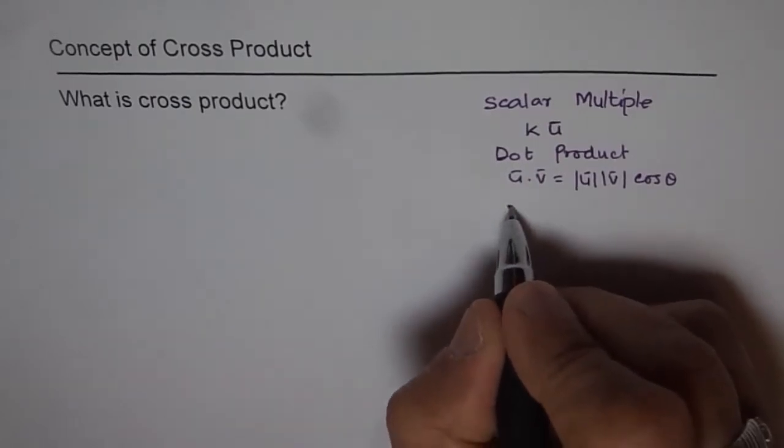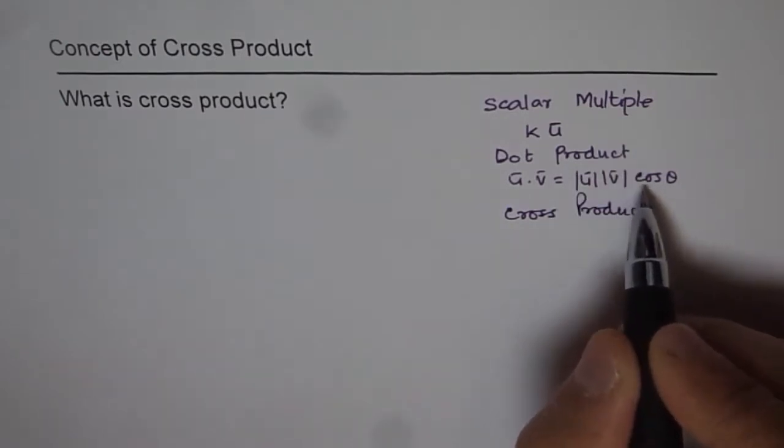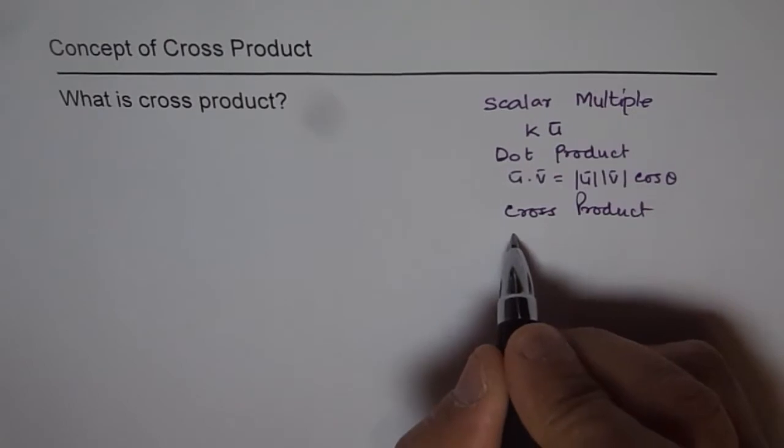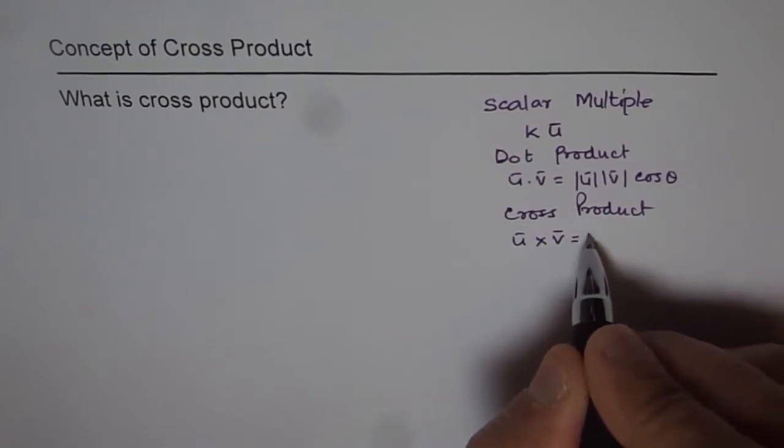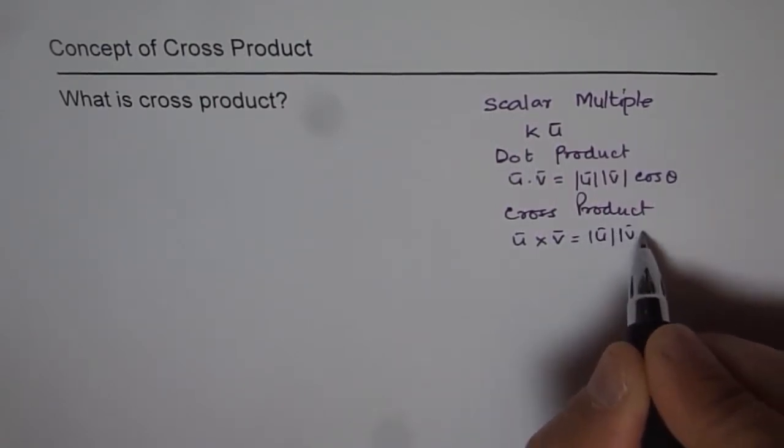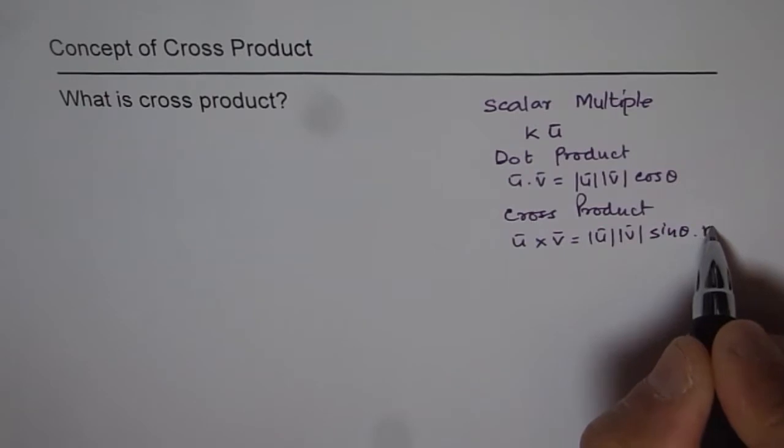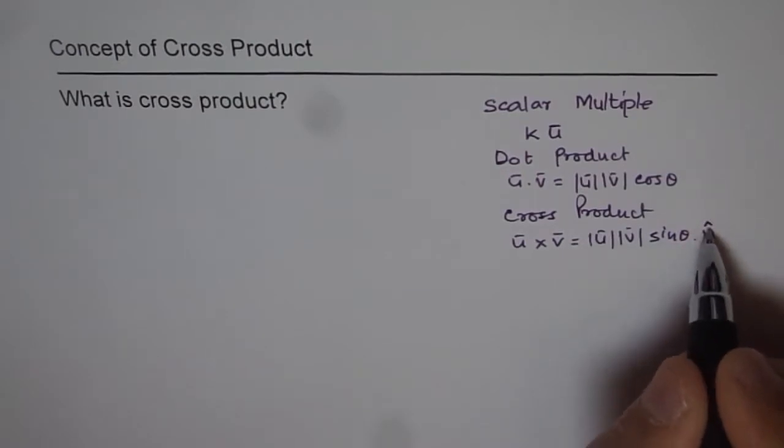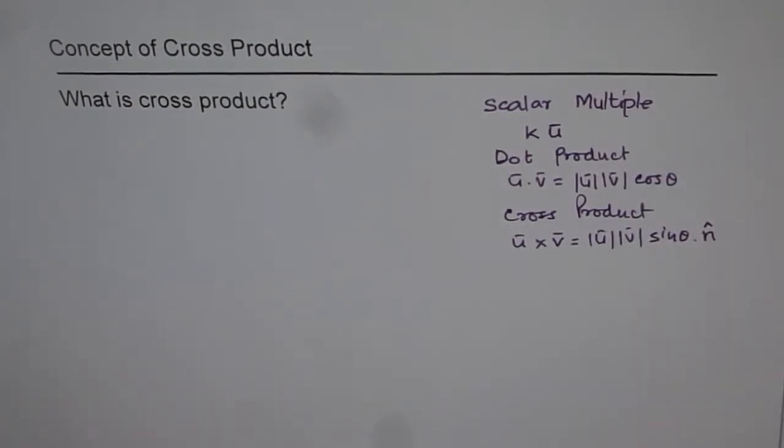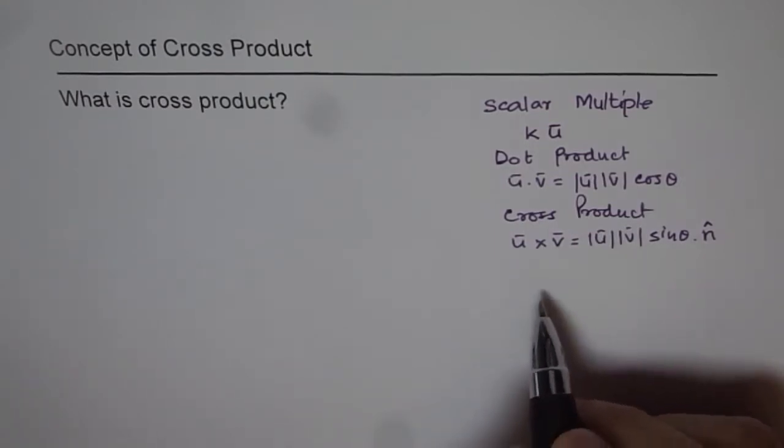Now we are talking about cross product. Dot product yields scalar quantities. Cross product, on the other hand, results into vector quantities. Cross product is written as u v sin theta, that's the magnitude part. Along with this, it has a direction. So we are putting normal, a direction unit vector which is normal to both u and v. Cross product gives you a vector which is perpendicular to both the vectors. That's the beauty of cross product.